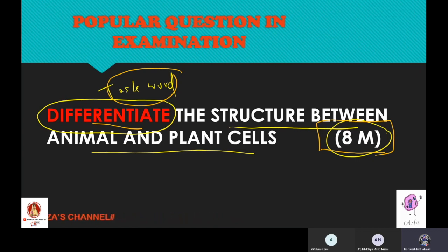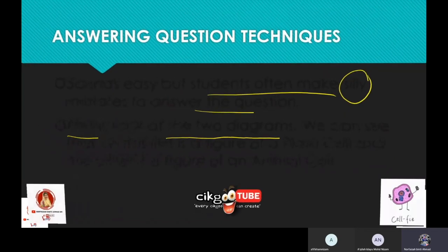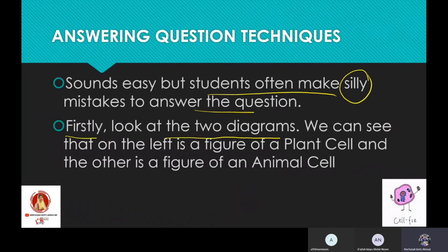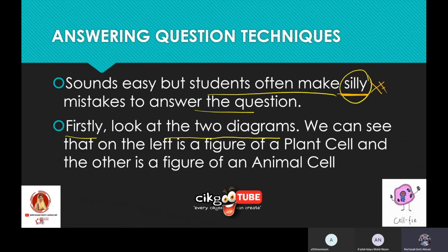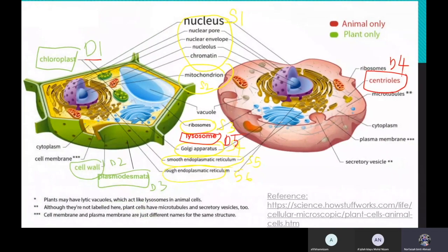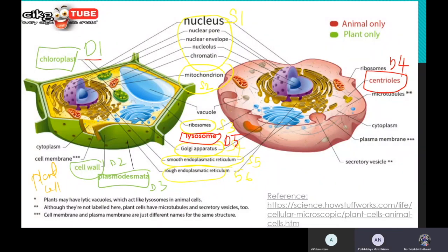Sounds very easy right, but students often make a silly mistake. First, teacher would like you to look at the two diagrams given. We can see that on the left is the plant cell, and on the right is the animal cell.